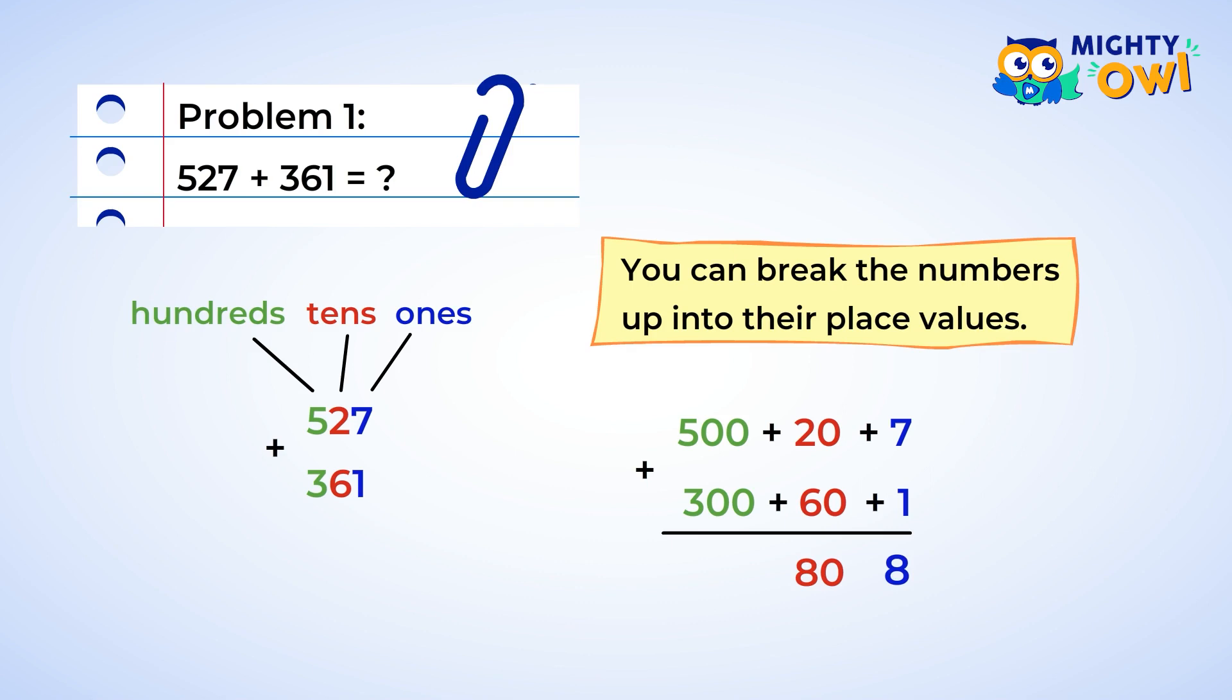The hundreds now. Five hundred plus three hundred, eight hundred. And now you can put all the pieces back together. We have eight hundreds, eight tens, and eight ones, or eight hundred plus eighty plus eight, which gives us eight hundred eighty-eight. What crazy eights.